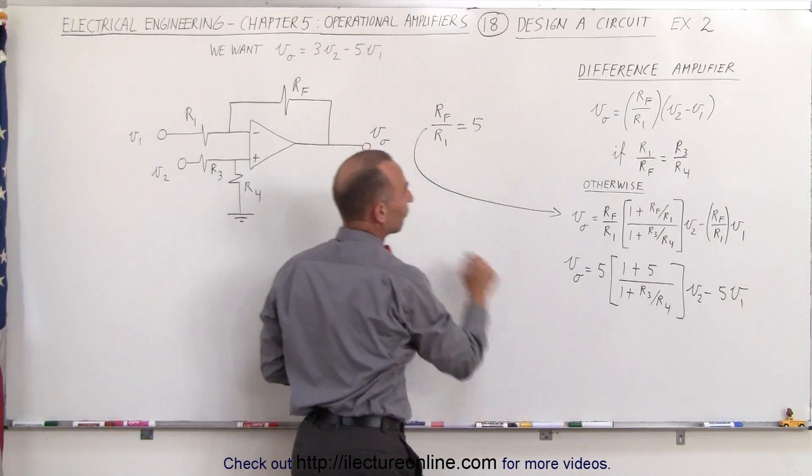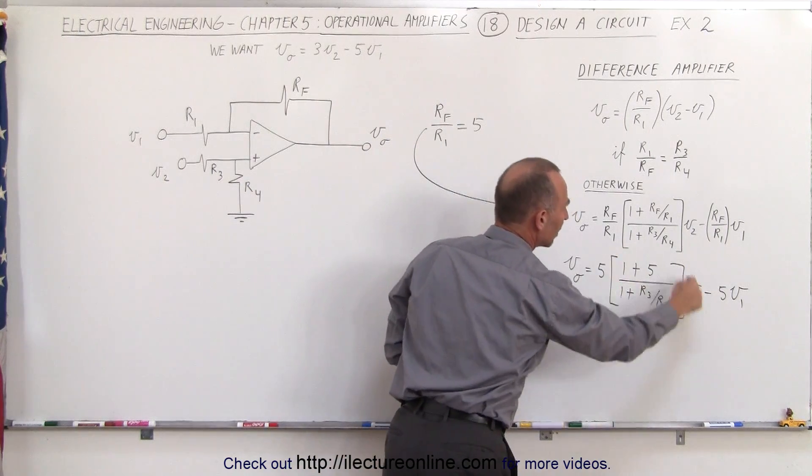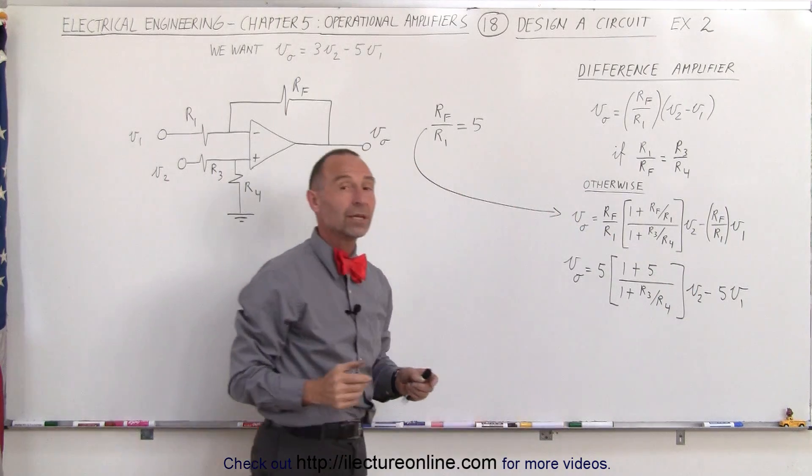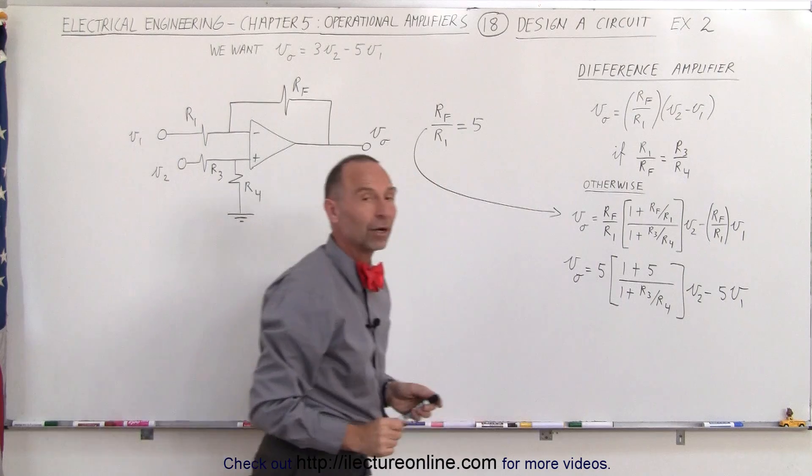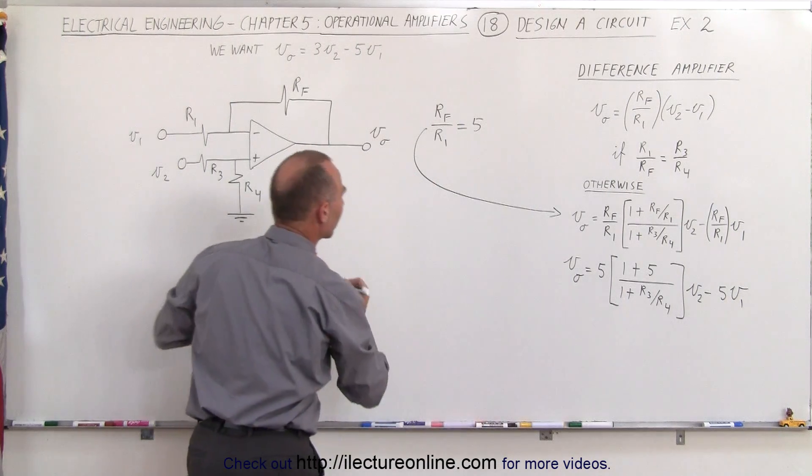But now we need a 3 in front of V2 which means this quantity here should equal 3, which means we're going to set it equal to 3 and solve for R3 divided by R4. So let's do that over here.